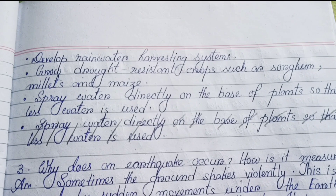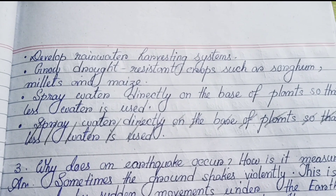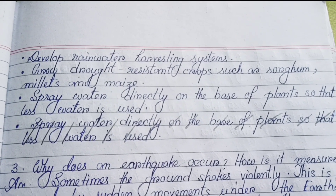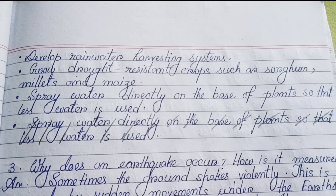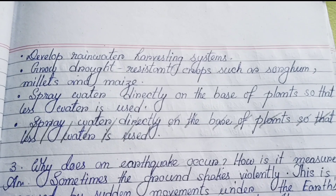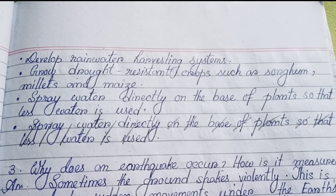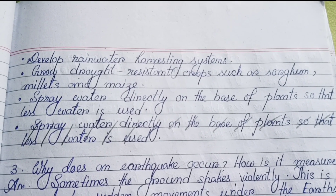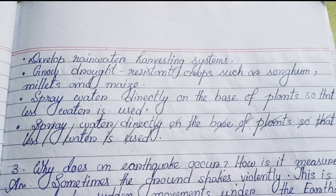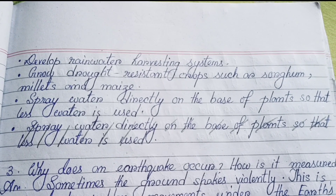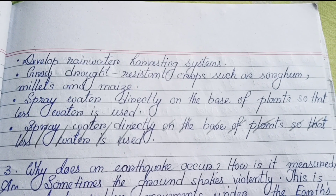To prevent droughts, we can do the following: grow more trees, develop rainwater harvesting systems, grow drought-resistant crops such as sorghum, millets, and maize, and spray water directly on the base of plants so that less water is used.